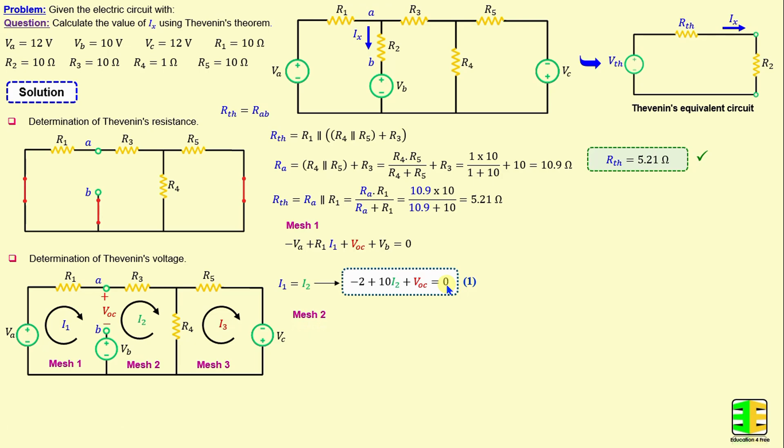Now, by applying Kirchhoff's voltage law in mesh 2, we can write R4 times (I2 minus I3) plus R3 times I2 minus VOC minus VB equals 0. If we replace the resistors and voltage with their numerical values, we obtain 11 times I2 minus I3 minus VOC minus 10 equals 0.